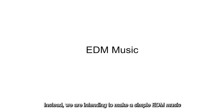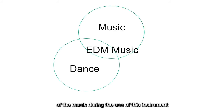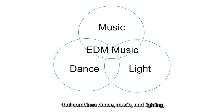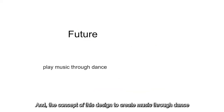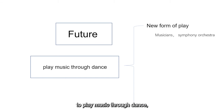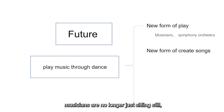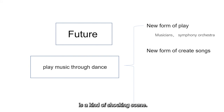Exploring the production of EDM music requires tone modulation with a synthesizer. Instead, we are intending to make simple EDM music through the human body by making different sounds through simple movements. The user is able to get into the atmosphere of the music, building use of this instrument that combines dance, music, and lighting, giving the audience a performance that combines both visual and auditory sensations. The concept of creating music through dance can be used in song choreography. Imagine a future symphony orchestra playing music through dance — musicians no longer just sitting still, but through common body movements, neatly playing epic music — a truly shocking experience.